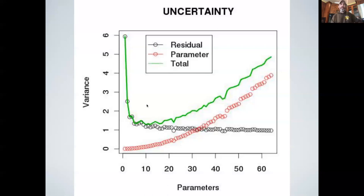And you can see that as I add complexity, the total error initially goes down, but then at some point, the total error starts going back up again. And that's a reflection of the fact that even though the residual error is going down, it's going down more slowly than the parameter error is going up. And that's always going to happen at some point.